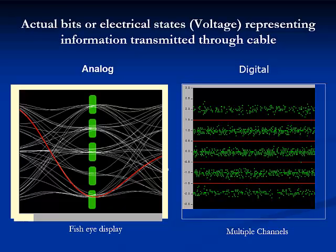This slide shows actual bits, or on-off electrical states, being transmitted through copper cabling. I'm showing you these slides so that you will realize that there is an actual physical phenomena of electrical signals being transmitted from a transmitter through a cable to a receiver. The cable could just as well be another transmission media, such as optical fiber, air, water, or vacuum.